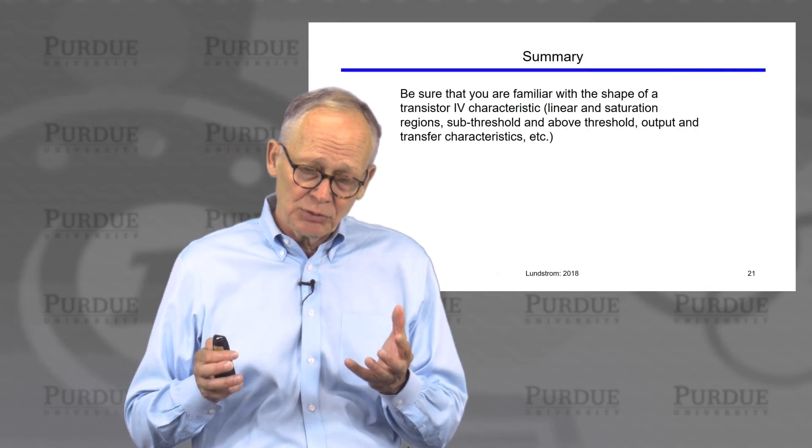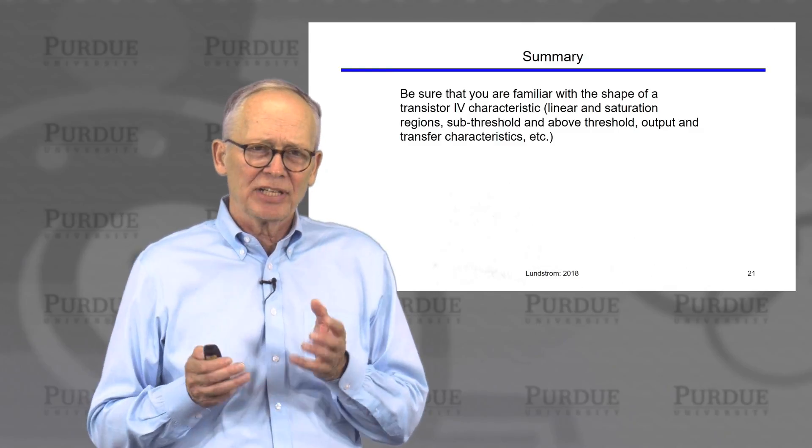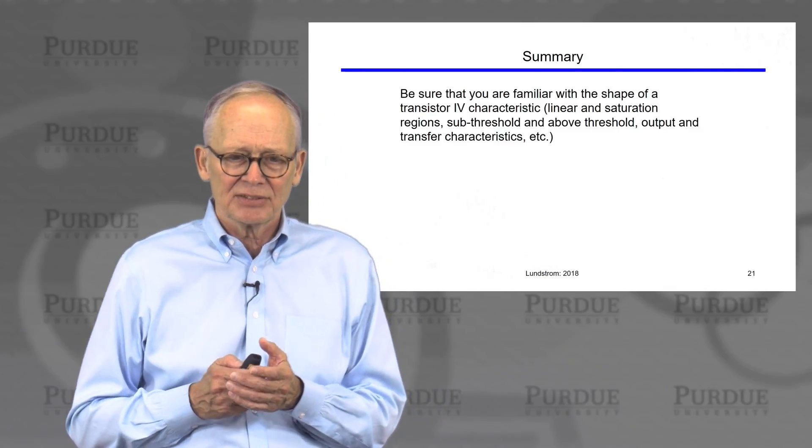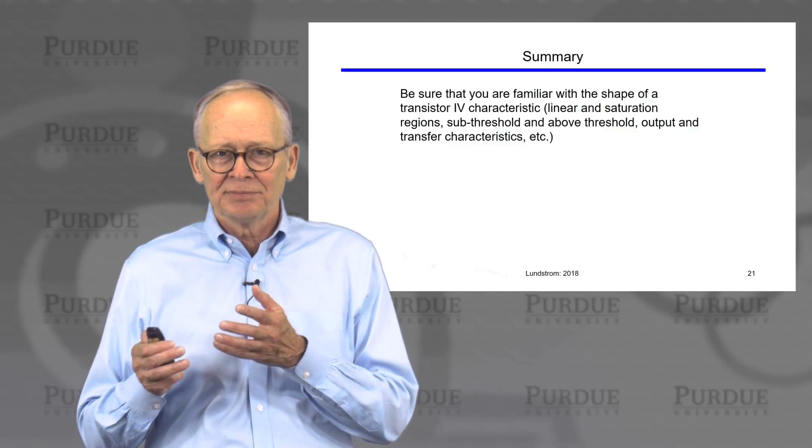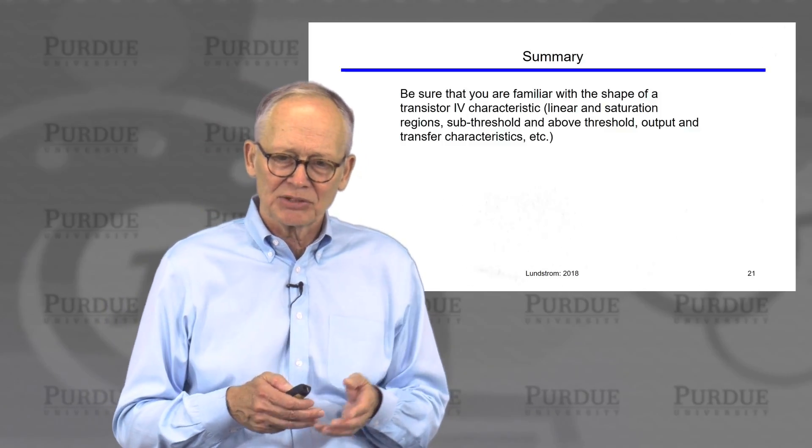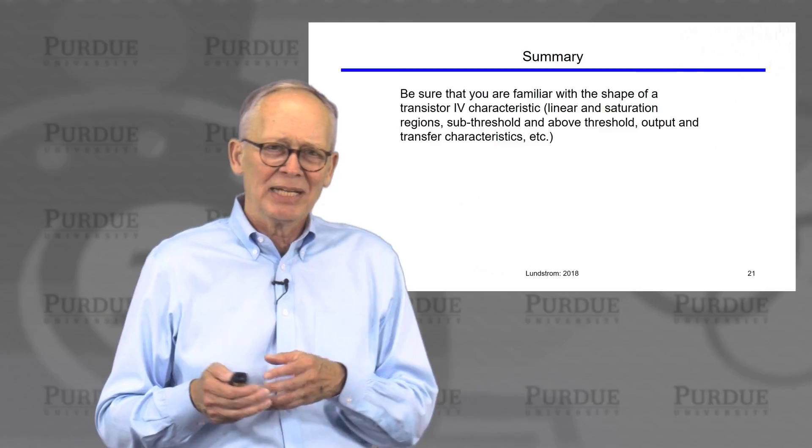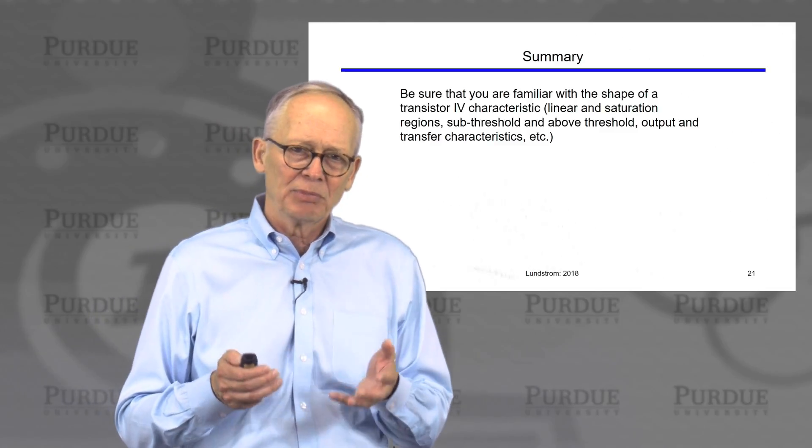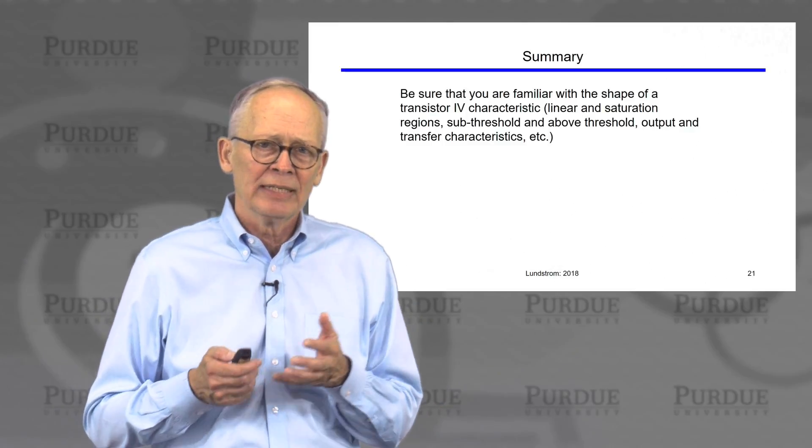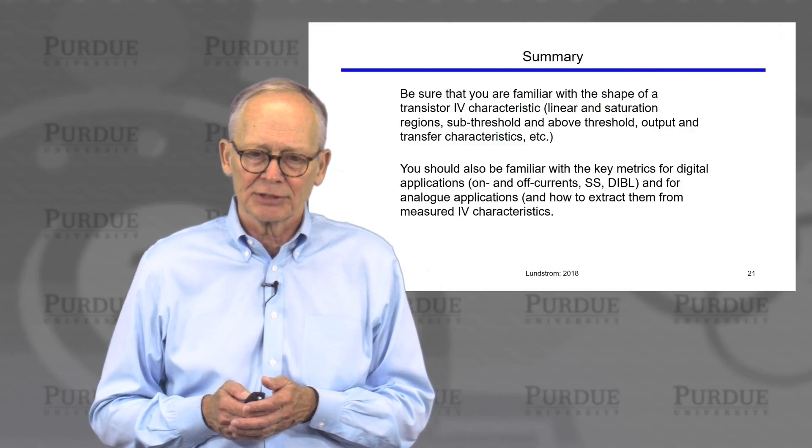So just to summarize, as you review unit one, be sure that you're familiar with the shape of the transistor characteristics, what we mean by the different regions, linear saturation, sub-threshold, above threshold, what we mean by an output characteristic, a transfer characteristic. You should be familiar with these terms because we'll just be using them over and over again for the remainder of the course. You should also be familiar with these key device metrics and what they mean, how they're defined, and how to extract them from a measured IV characteristic.